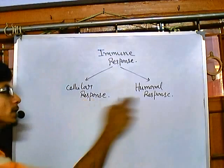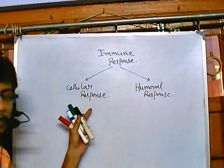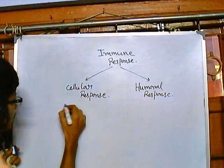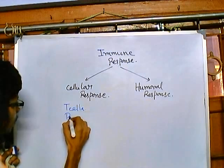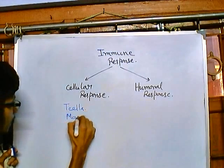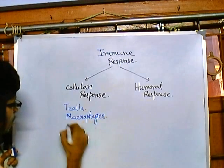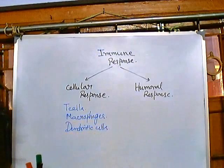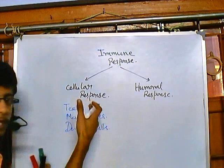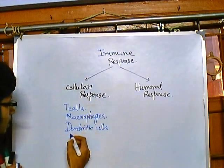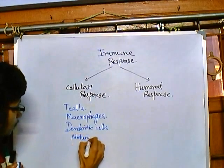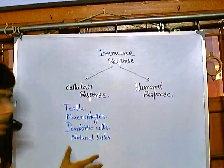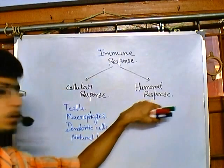Among the cellular response, as the name suggests, it is mediated by cells. The cells found in this cellular response include T cells, macrophages, dendritic cells, T lymphocytic cells, and also natural killer cells. So we have this variety of cells in the cellular mode of immune response.